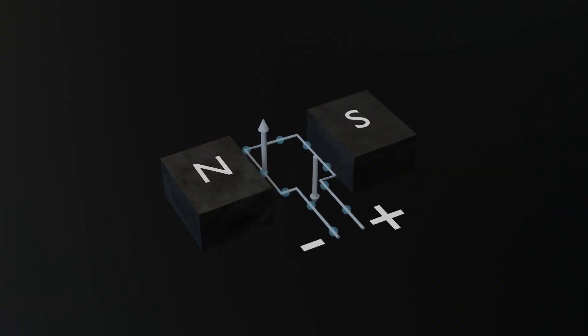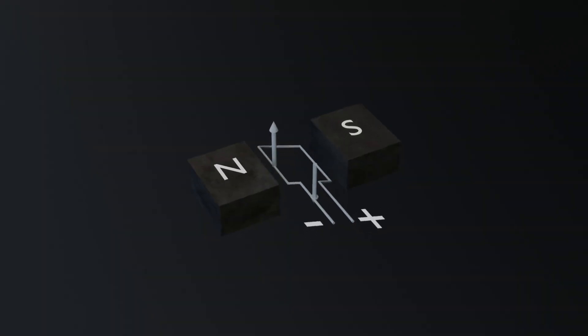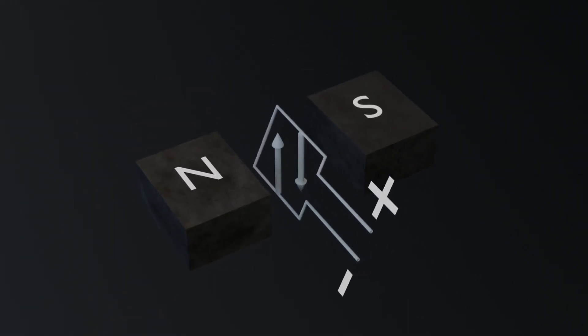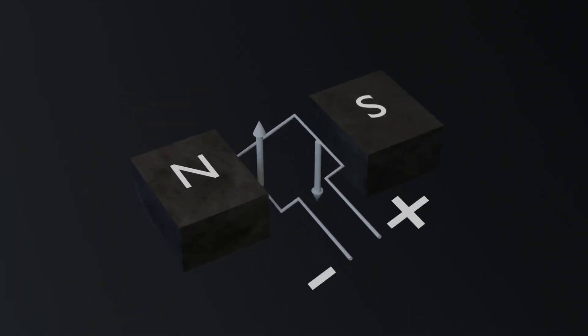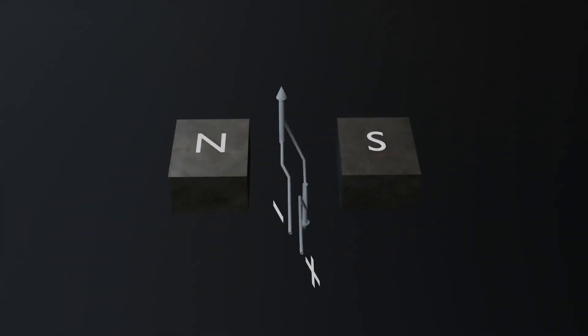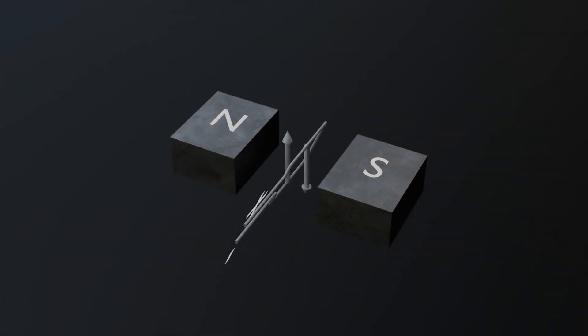For the first issue, where the force on the wire changes direction after half a rotation and resists the motion, we can solve this by changing the direction of the current at the right moment. This changes the direction of the force on the wire, keeping the rotation going in the same direction. Essentially, by continuously reversing the current at the right times, the force on the coil keeps pushing it forward, ensuring smooth and continuous rotation in a single direction.